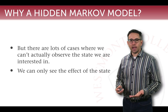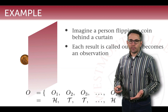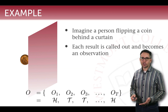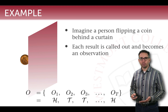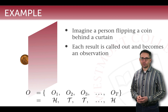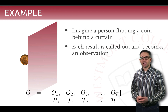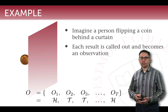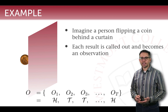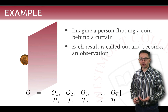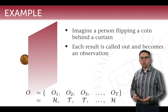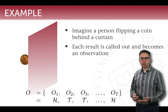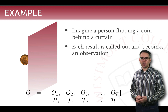Let me motivate this and explain where we're going. Imagine there is a person behind a curtain who is flipping a coin. Each time they flip the coin, they observe whether it's heads or tails and call it out through the curtain. The set of observations someone on the other side of the curtain receives is not the coin itself, but what the person calls out. In a series of T observations, we would have O1, O2, O3, up to OT — each being heads or tails called out through the curtain.